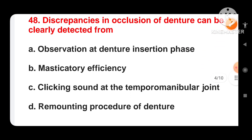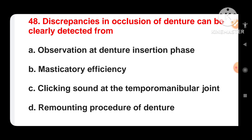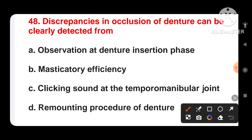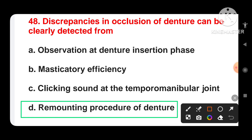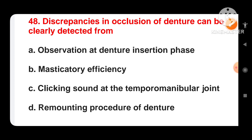Next question: discrepancies in occlusion of dentures can be clearly detected from — options are observation at denture insertion phase, masticatory efficiency, clicking sound at the TMJ, or remounting procedure of the denture. The correct answer is remounting procedure of the denture. Discrepancies in occlusion of dentures can be most clearly detected from the remounting procedure.